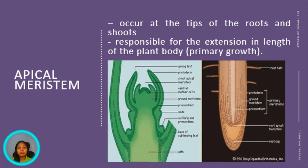Apical meristem can be divided into three parts: the protoderm, which gives rise to the epidermis; the procambium, which gives rise to primary vascular tissue; and the ground meristem, which gives rise to ground tissue.